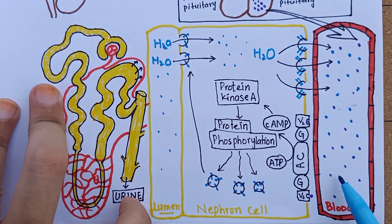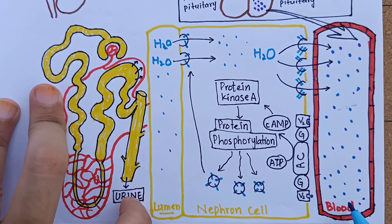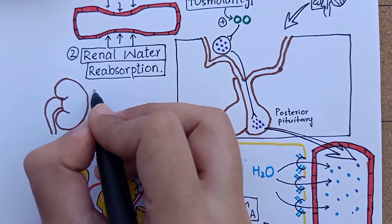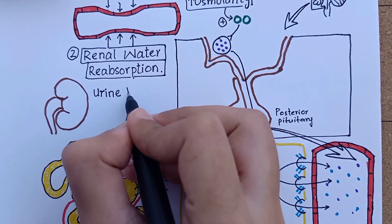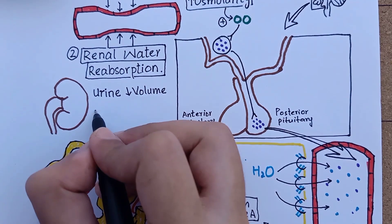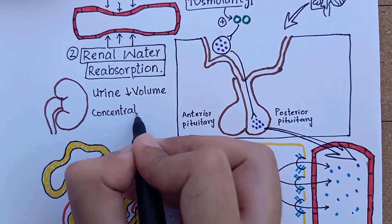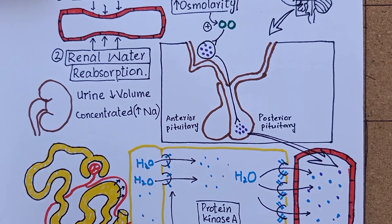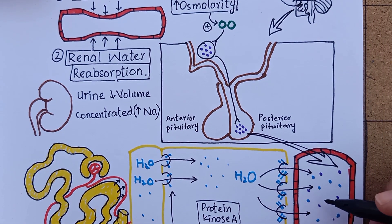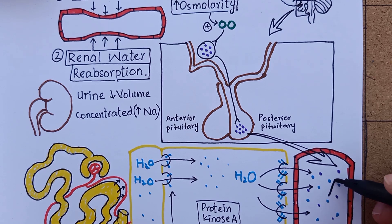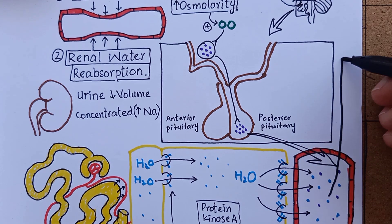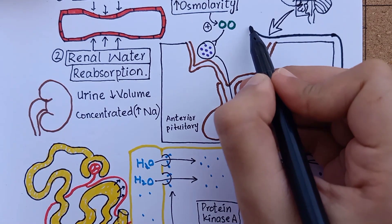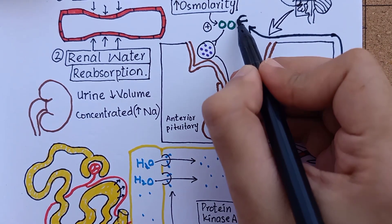This whole mechanism conserves body fluid volume by increasing water reabsorption and excretes a small volume of concentrated urine during the period of water deficit, while sodium and other solutes continue to be excreted in urine. The initial hyperosmolar state is then corrected, sending an inhibitory signal to osmoreceptors to stop the secretion of ADH.